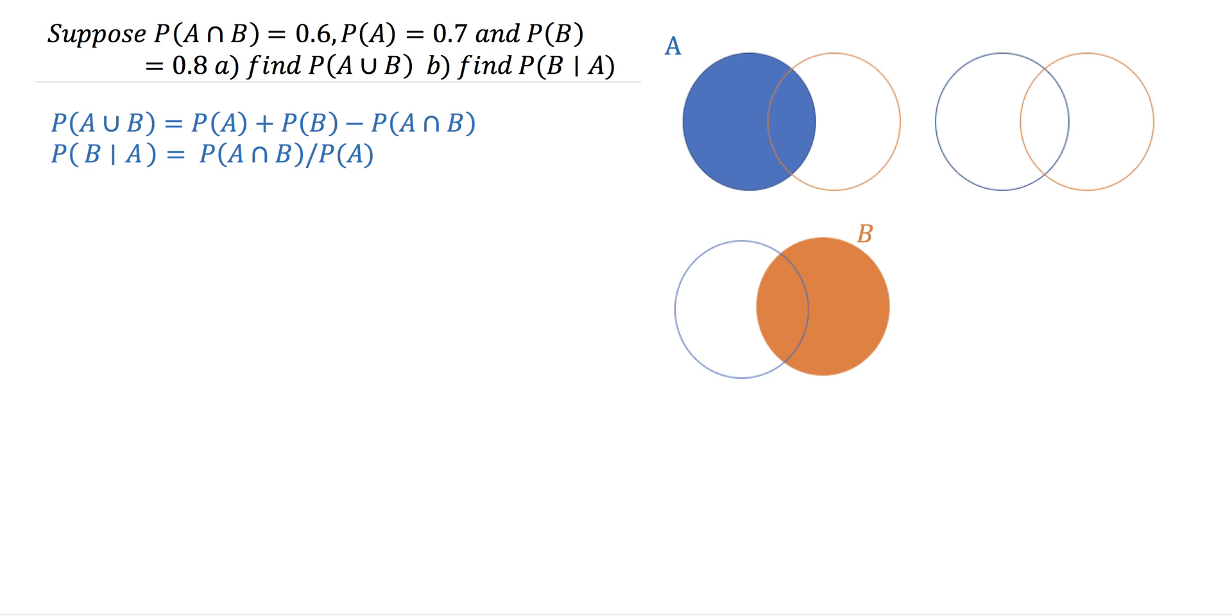You see I've got event A in a Venn diagram and event B, and then I've got these two blank spaces. I just wanted to quickly go through where this formula comes from and why.